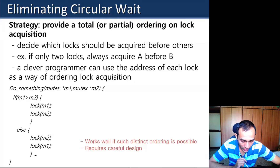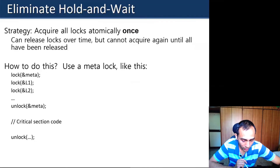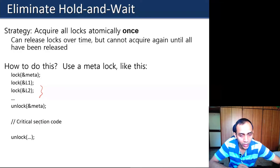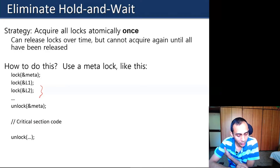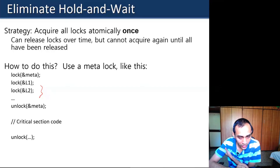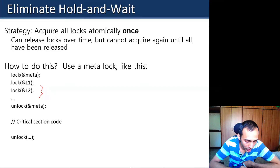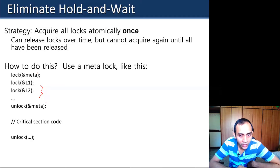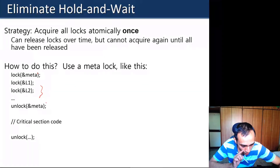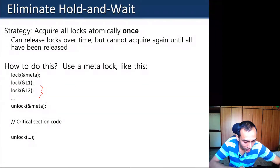Another approach is to use a big lock around all the resources — acquire all required locks at once while holding a larger meta-lock around them, so there is no possibility of hold-and-wait. This prevents a scenario where some locks are acquired and a context switch occurs. Just have a meta-lock around the real locks.